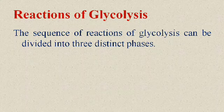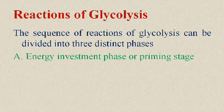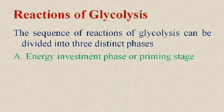The sequence of reactions of glycolysis can be divided into three distinct phases, with 10 reactions in total. The first phase is called the energy investment phase or priming phase. Just as in business you must invest money before earning, in glycolysis this phase involves a loss of ATP molecules. It consists of the first three reactions, in which two ATP molecules are consumed.